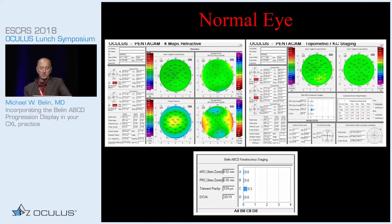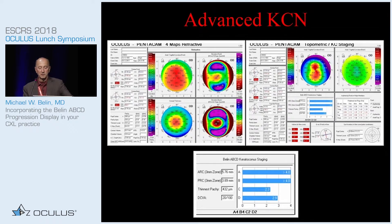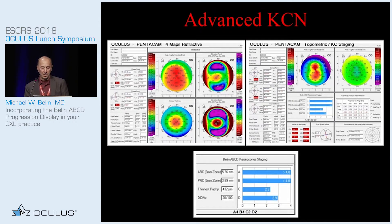A normal eye — you see everything is rated at zero. Here's an eye with advanced keratoconus. You can see A is over the scale, a markedly ectatic anterior surface, markedly ectatic posterior surface, a moderately thin cornea at C2, and moderate decrease in vision at D2.